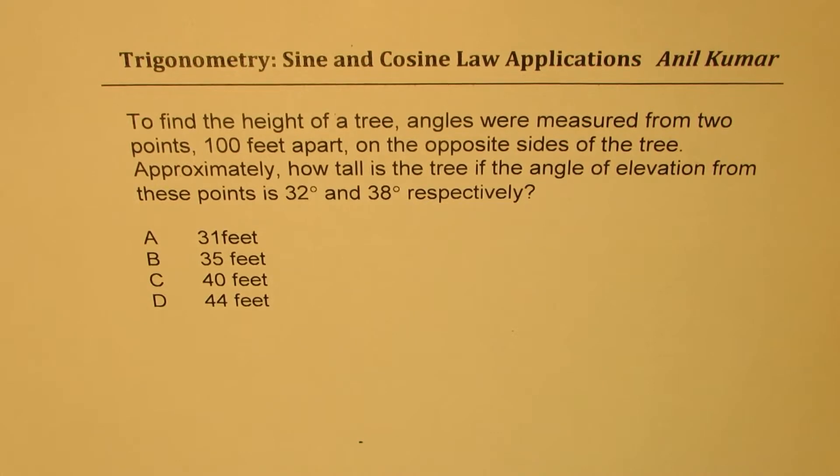To find the height of a tree, angles were measured from two points 100 feet apart on the opposite side of the tree. Approximately, how tall is the tree if the angle of elevation from these points is 32 degrees and 38 degrees respectively? Let's sketch the diagram. So let's say that's the ground. We're considering two points A and B, and these points are 100 feet away.